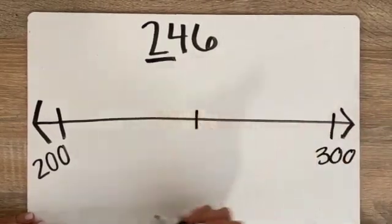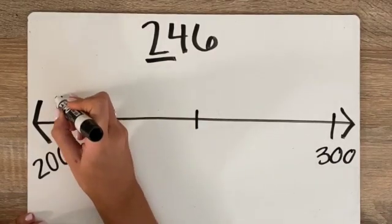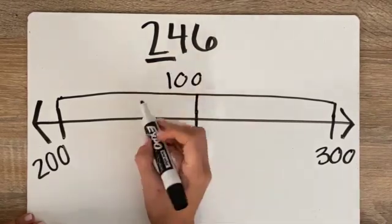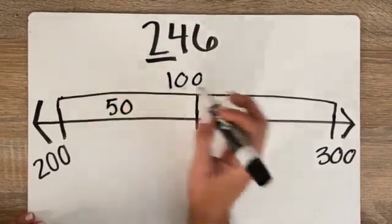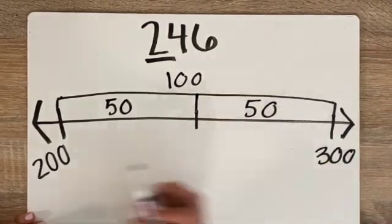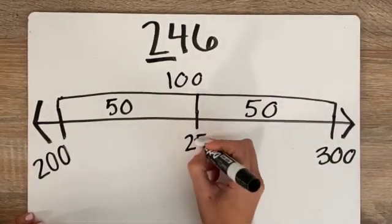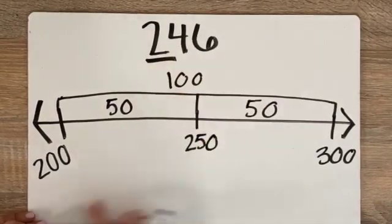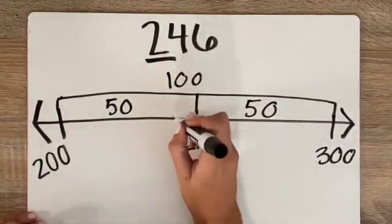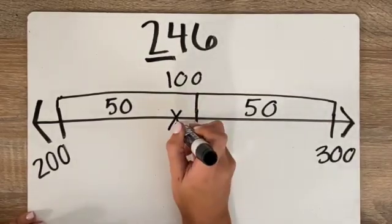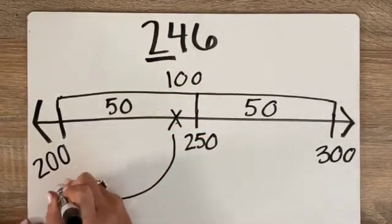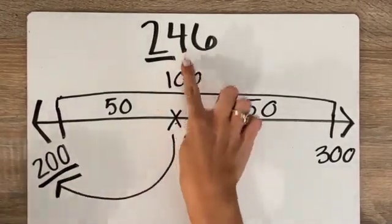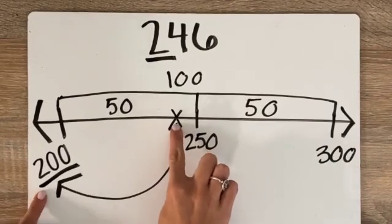My halfway point this time, since this space in between is worth 100, each half would be worth 50 because 50 plus 50 is 100. So my halfway point is 250. And 246 is less than 250, so it'll be somewhere over here. I would round it down to 200, because 246 is closer to 200 than it is to 300.